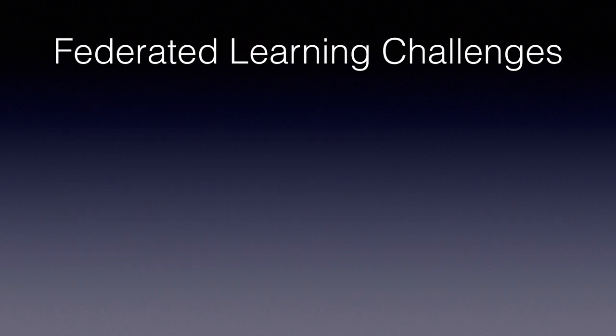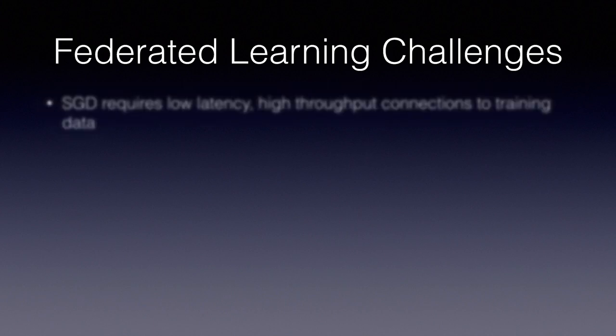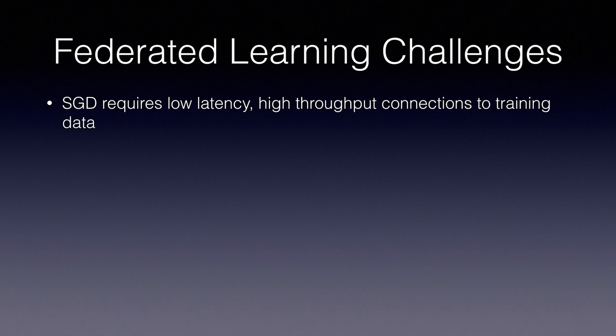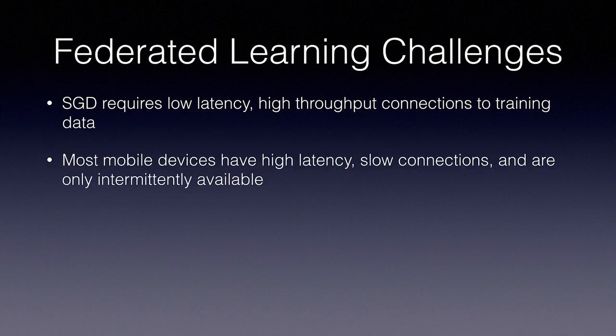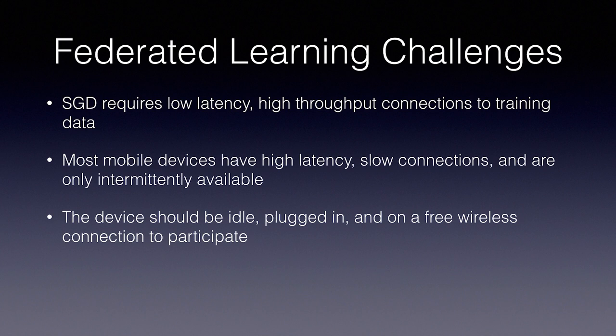Now that we understand distributed training, let's dive a bit deeper into the specialized problems of federated learning. In light of what we just learned, this means using end-user devices such as cell phones as workers, which train on local data from the device. There are many algorithmic and technical challenges to making this work smoothly. For example, stochastic gradient descent requires low-latency, high-throughput connections to the training data, but most mobile devices have high-latency, low-bandwidth connections and are only intermittently available for training. To avoid impacting users negatively, the device must be idle, plugged in, and on a free wireless connection before training can occur.